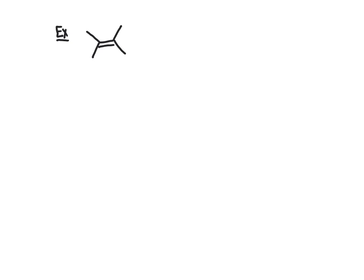We're going to start here with 2,3-dimethyl-2-butene and mix that in with HBr. Anytime you see an alkene as one of your reactants, be thinking addition. We're going to walk through how we are going to go about adding HBr across the carbon-carbon double bond — in other words, we're going to look at the mechanism for this particular reaction, that series of steps involved in going from the reactants to the product.